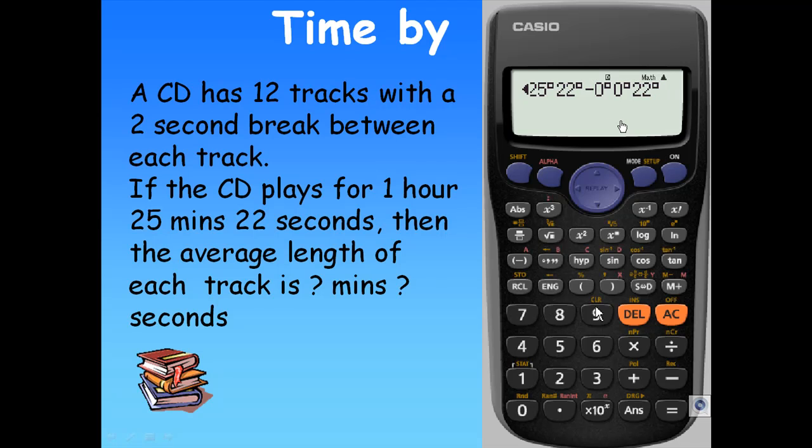Then you press the equal sign, and it tells you that the total time is 1 hour, 25 minutes. Take this answer divided by 12, you will find the average time for each track. And this is 7 minutes and 5 seconds.